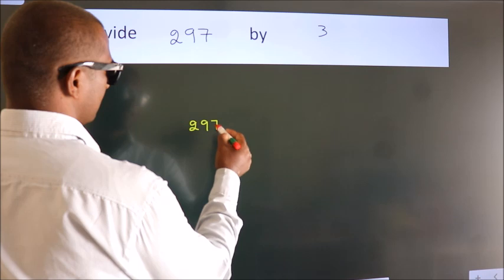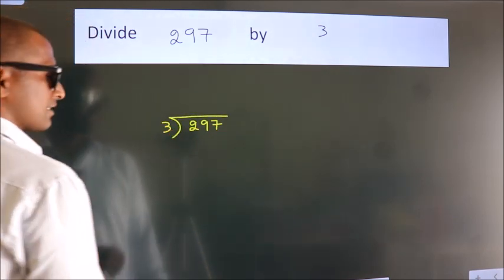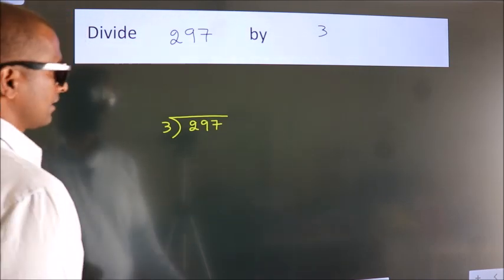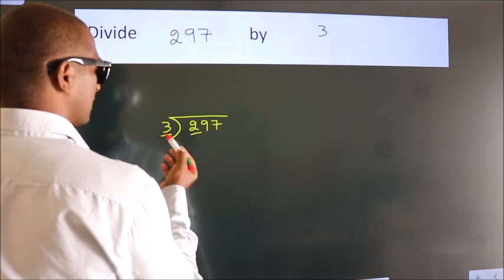297 here, 3 here. This is step 1. Next, here we have 2, here 3. 2 is smaller than 3.